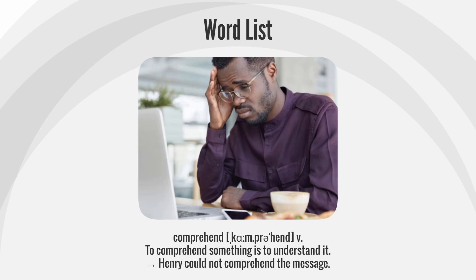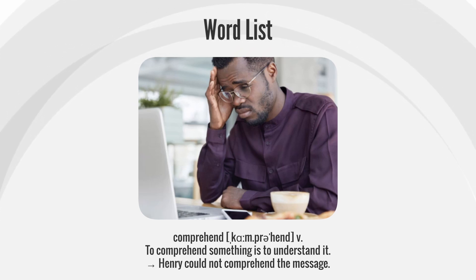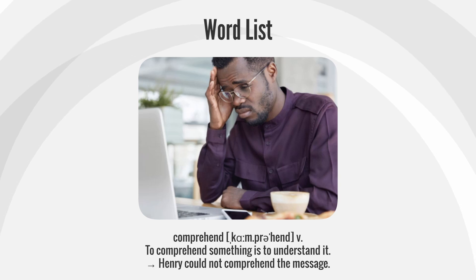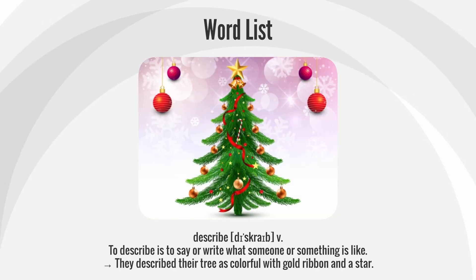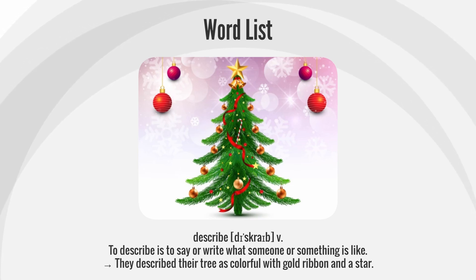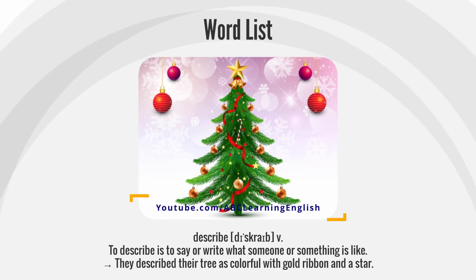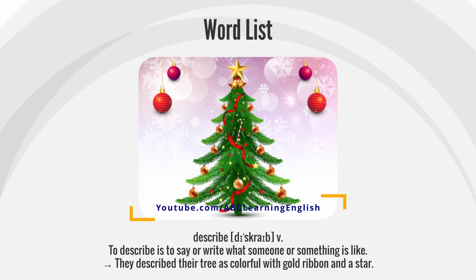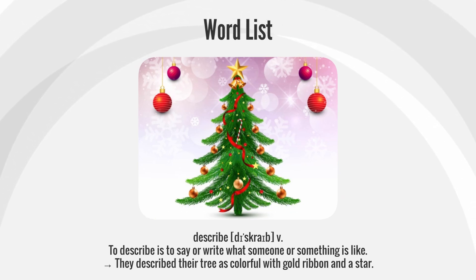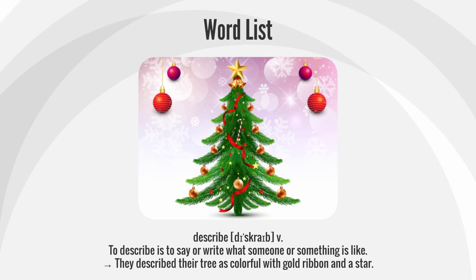Comprehend: To comprehend something is to understand it. Henry could not comprehend the message. Describe: To describe is to say or write what someone or something is like. They describe their tree as colorful, with gold ribbon and a star.